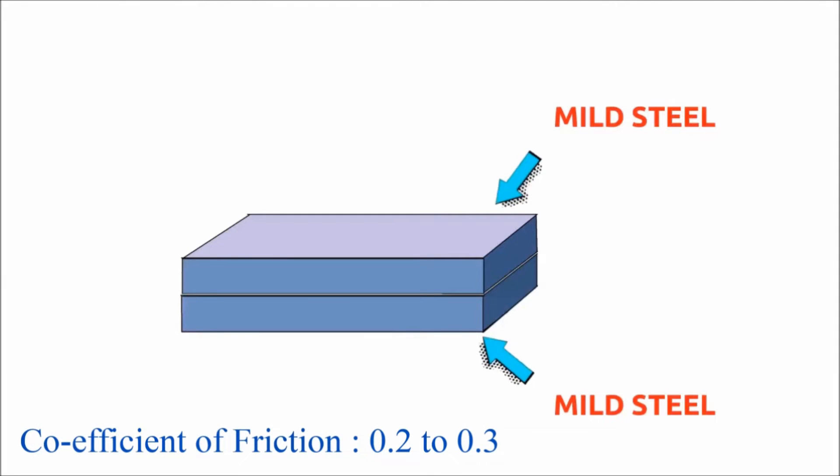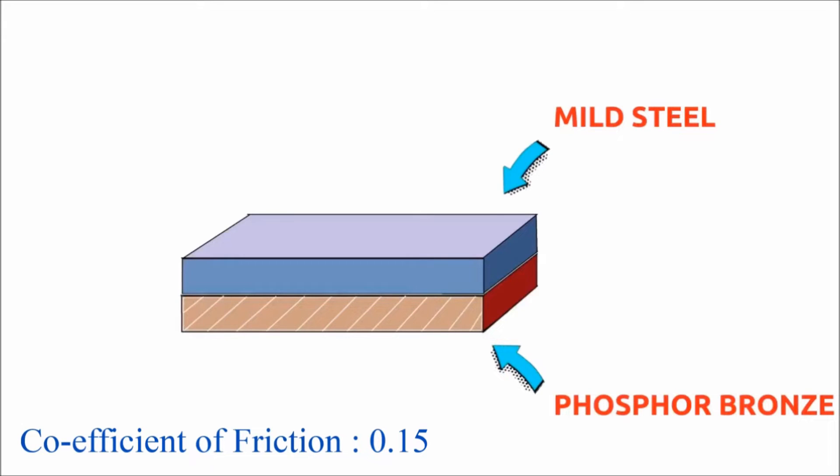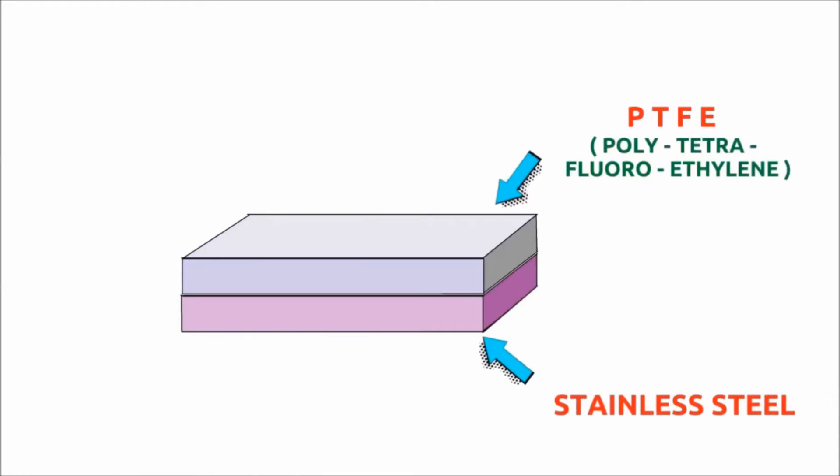When mild steel over a mild steel plate is used in sliding bearing, the coefficient of friction will be between 0.2 to 0.3. The coefficient of friction will be 0.15 when mild steel over phosphor bronze plate is used, and less than 0.08 when PTFE is used over stainless steel plate.